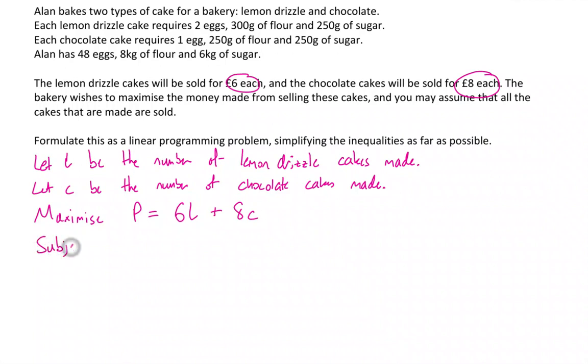Now we need our constraints, subject to: we're going to have an inequality for eggs, one for flour and one for sugar. We know that we need two eggs for every lemon drizzle cake, so two lots of l, plus we need one egg for every chocolate cake, so one lot of c. We have 48 eggs available, so we can't go over 48. That's got to be less than or equal to 48, and we can't simplify that inequality any further.